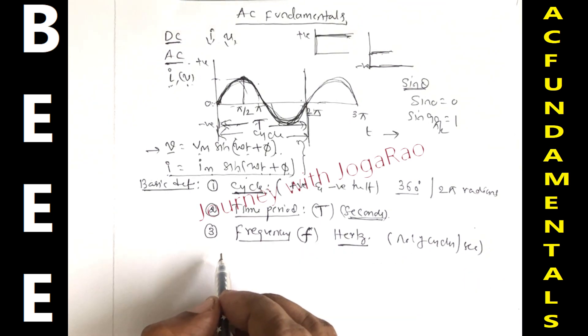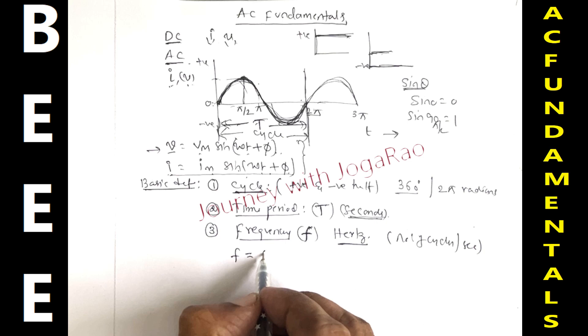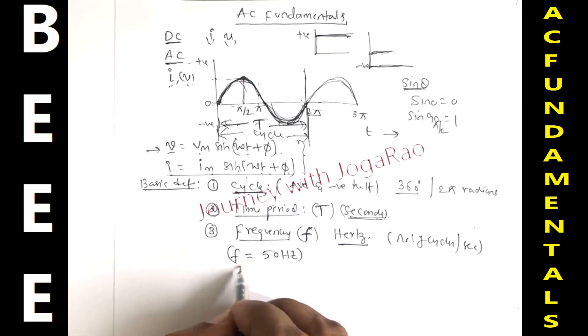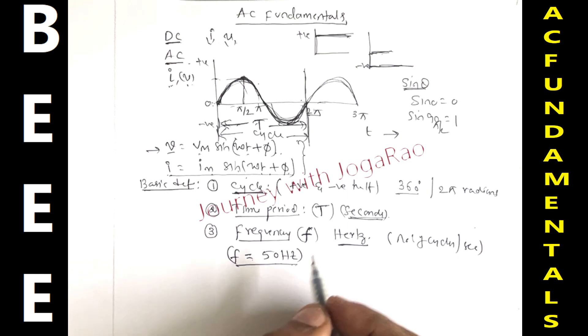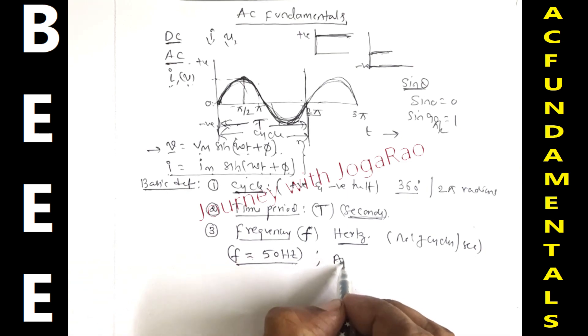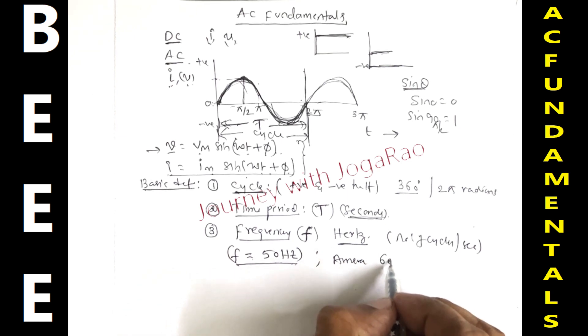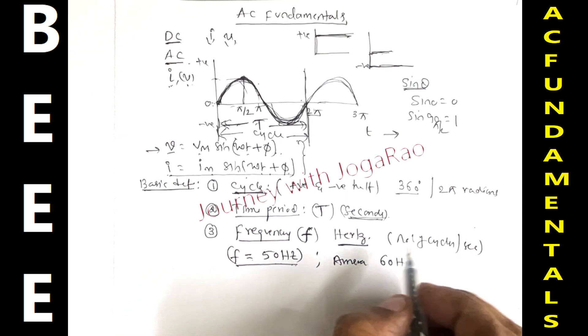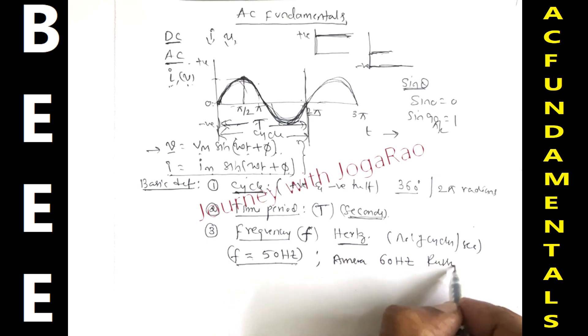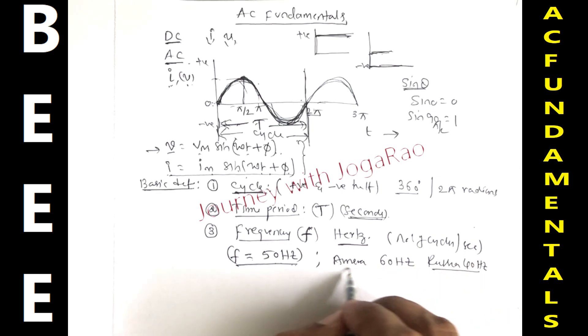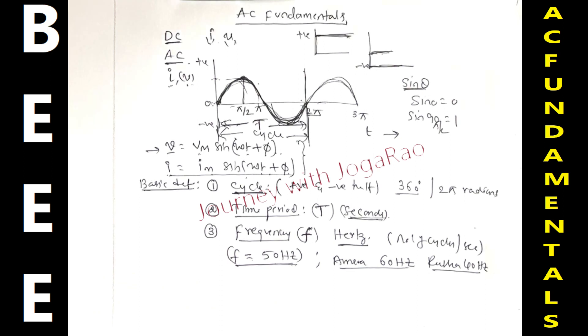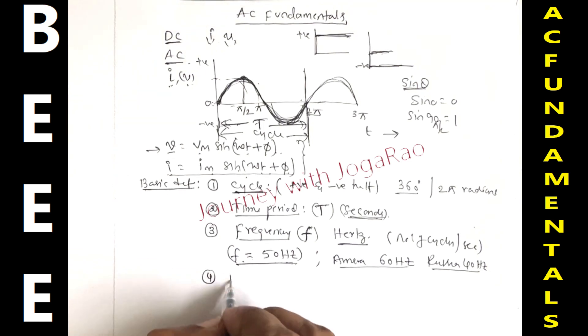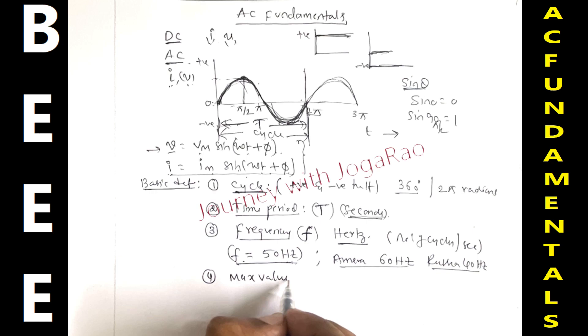In India, the frequency value f is 50 hertz. In some countries like USA, the supply is 60 hertz. In France and Russia, it is 40 hertz. So the frequency may vary by country.